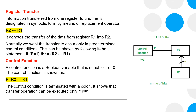Register Transfer: information transferred from one register to another is designated in symbolic form by means of a replacement operator. It denotes the transfer of data from register R1 into R2. Normally, we want the transfer to occur only under predetermined control conditions. This can be shown by the following if-then statement: if p equals 1, then information from R1 goes to R2.